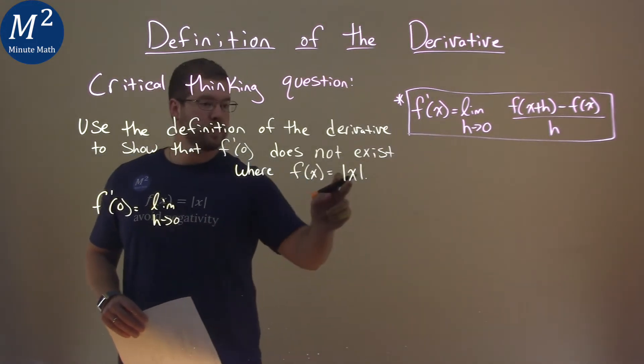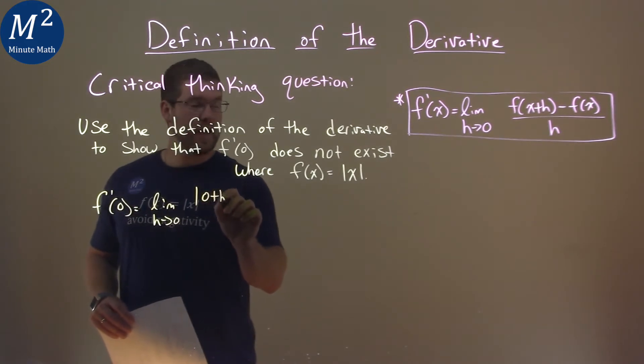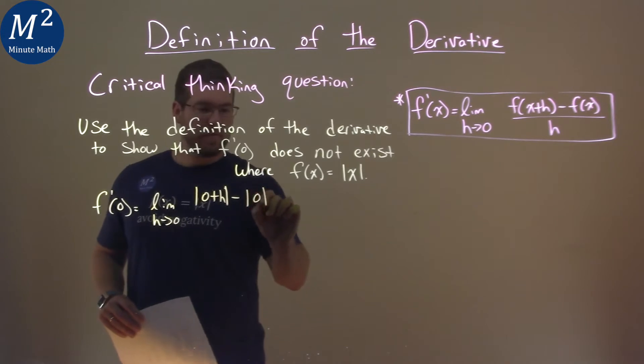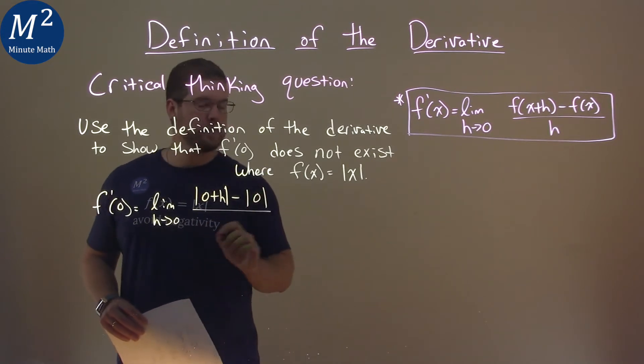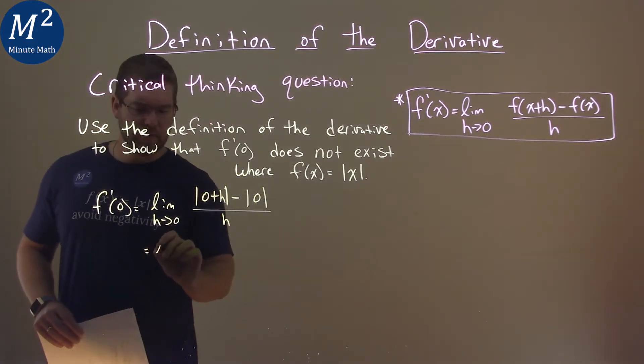Of our function, this absolute value of x, so this absolute value, instead of x I'm putting in zero, so zero plus h, minus the absolute value of zero, all over just h.